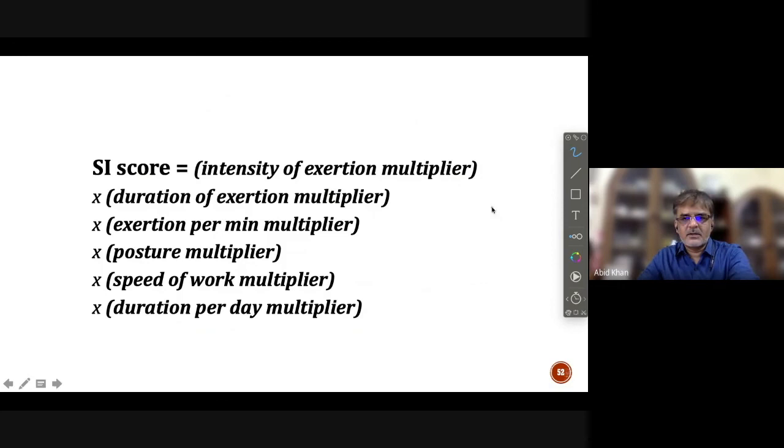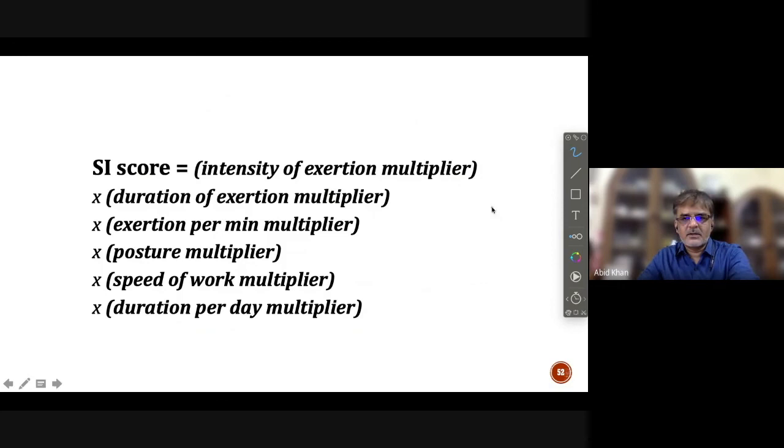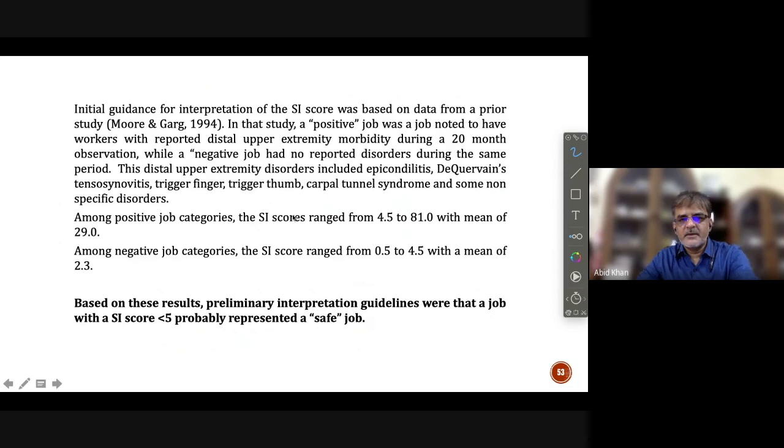Now, Gurg has given a kind of criteria over here. If the value is—this is what is the formula. We have already discussed that strain index score is nothing but the multiplication of the multipliers with respect to the level of difficulty regarding each variable from the respective tables. And then we get a final score. So here you are having final score 1.6785. So they say that the job...